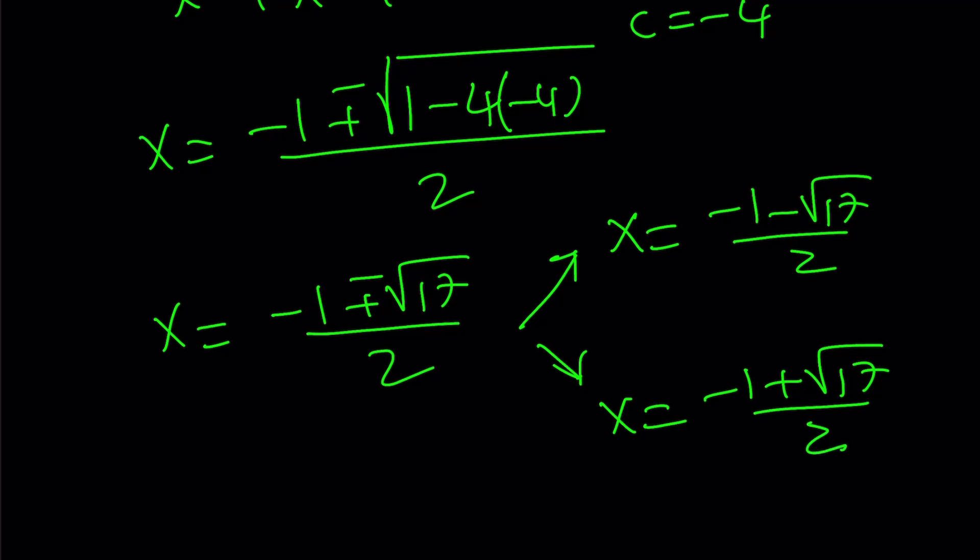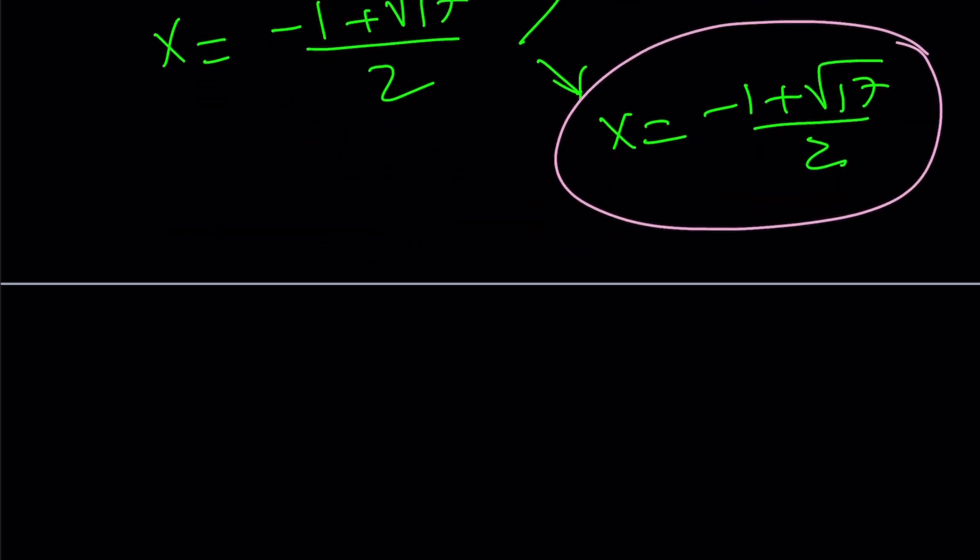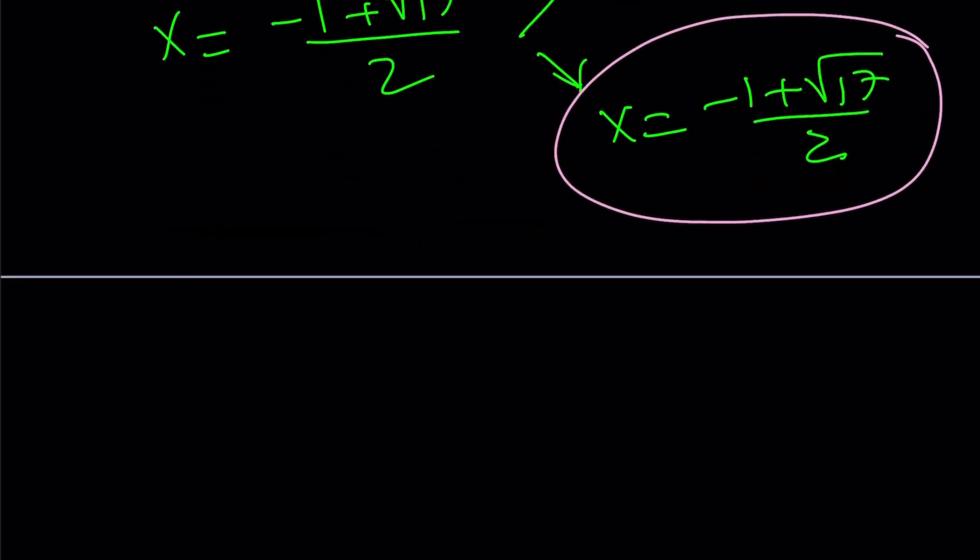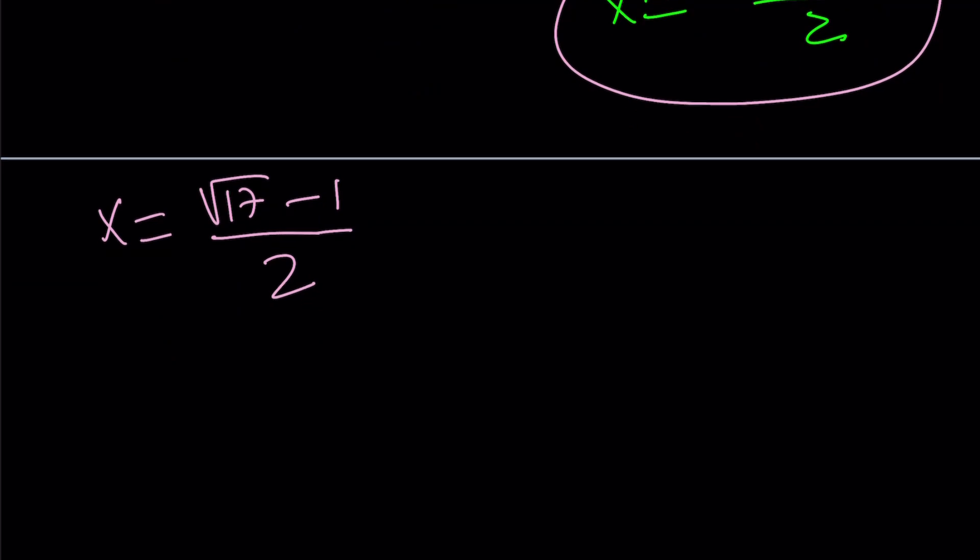Now, which one can I use? You can use either one, but I'm going to use the second one because it's more positive. But guess what? If you use the first one, you'll get the same thing. We're looking for a numerical value, by the way. Forgot to say that, probably. So I'm going to take x to be root 17 minus 1 over 2. Let's make it even more positive. Start with the positive term.